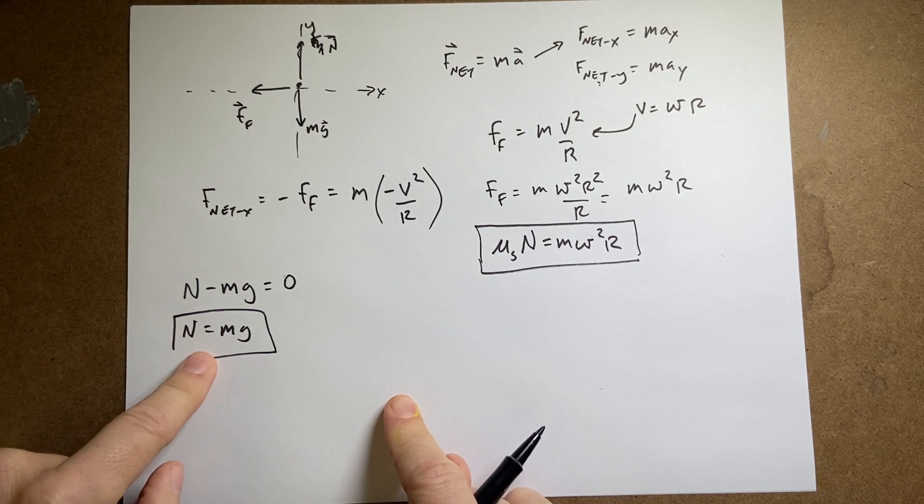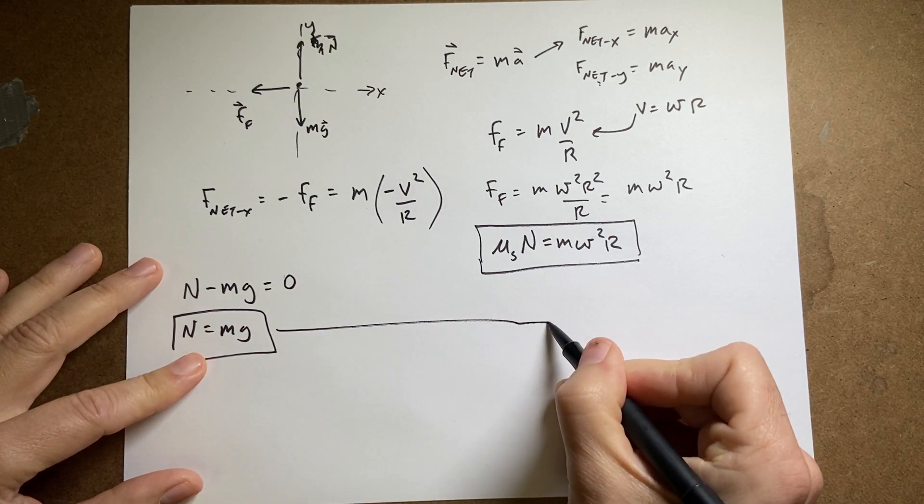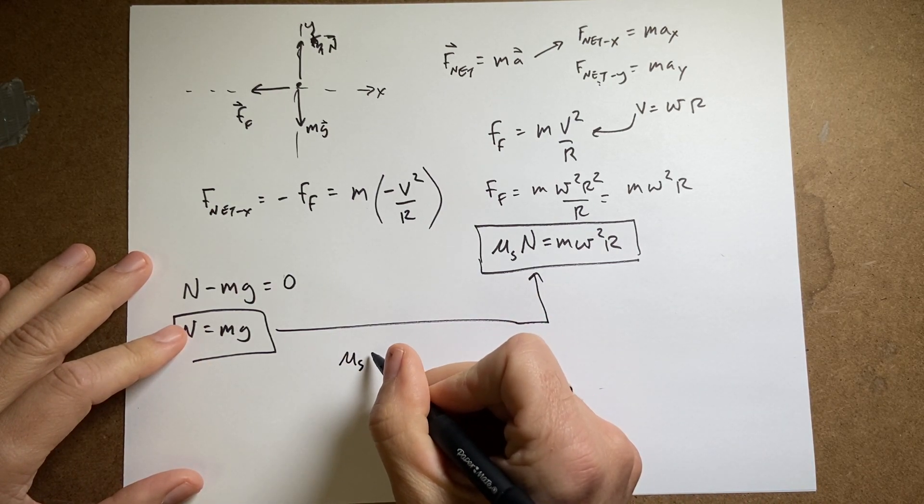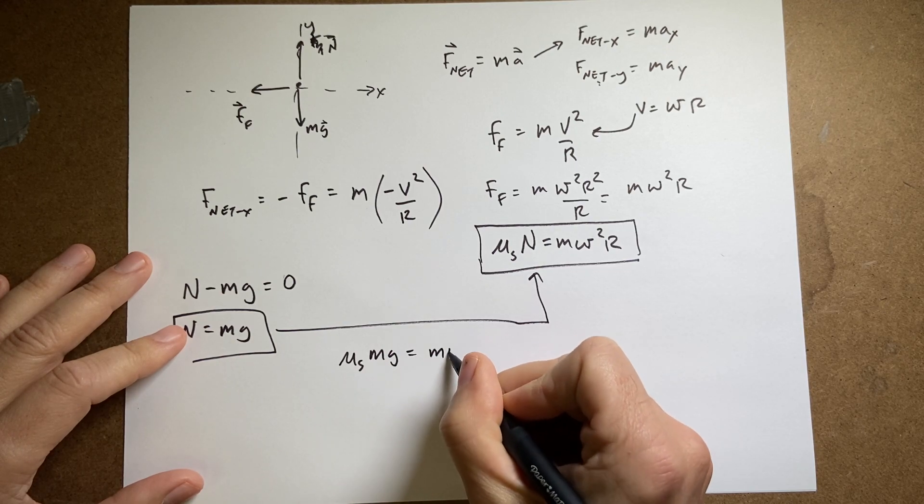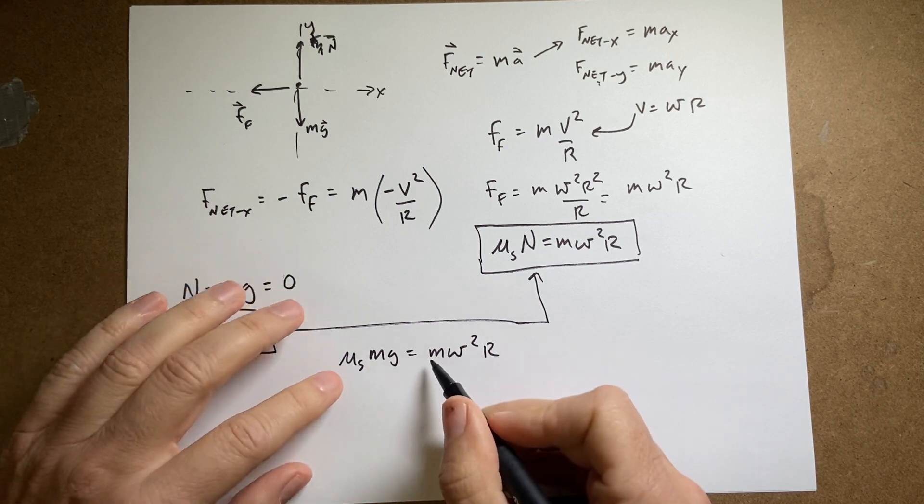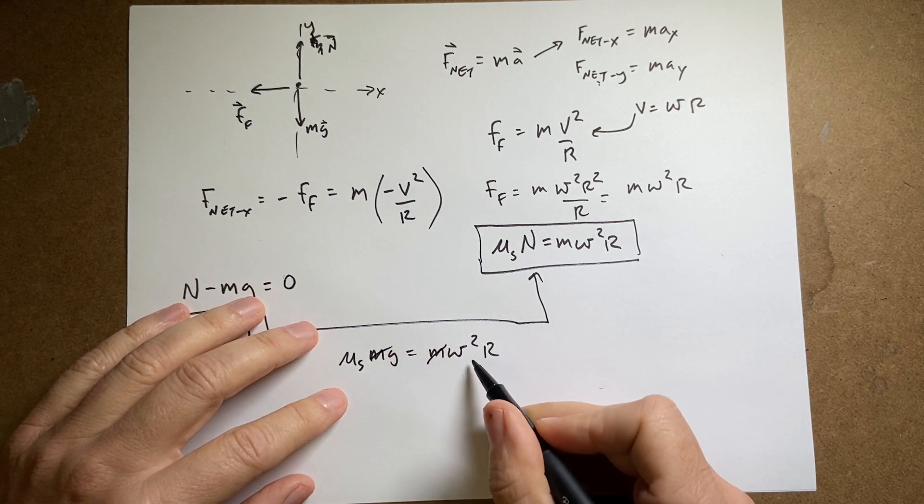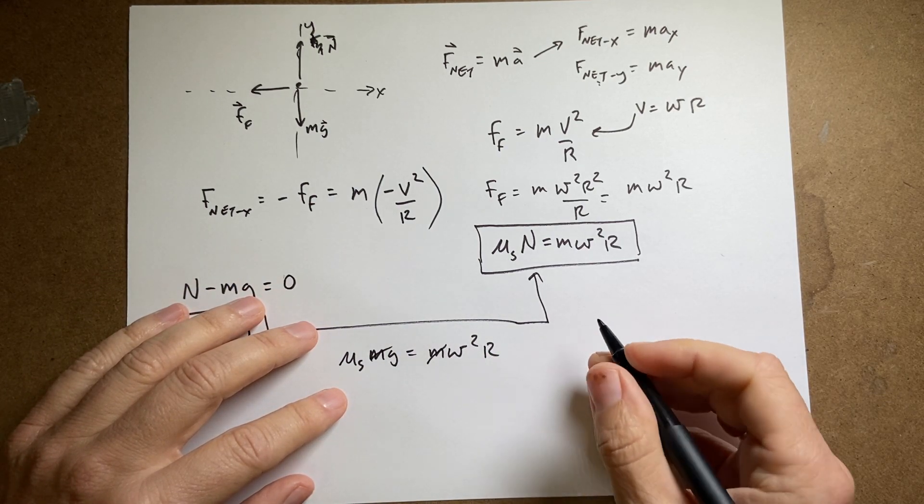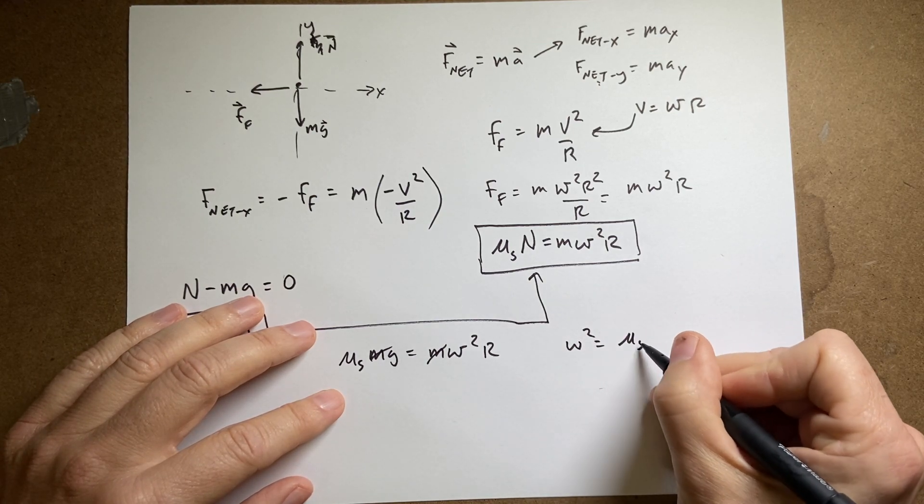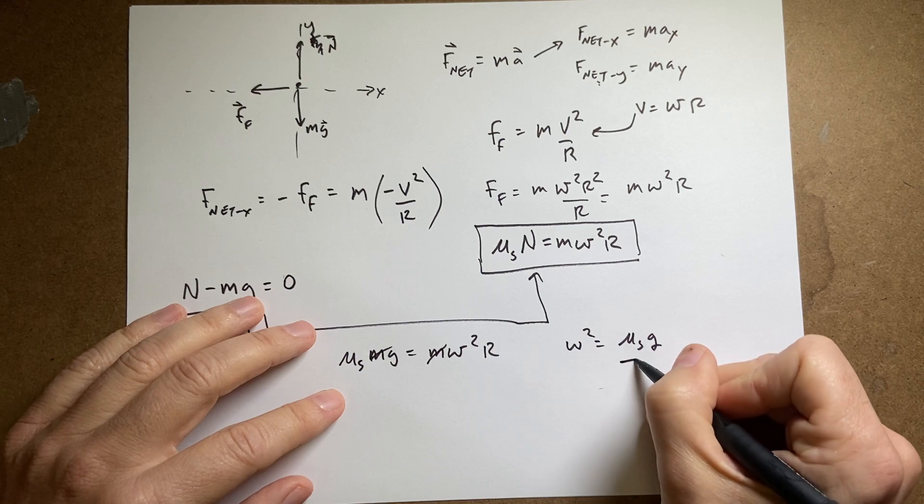But now I can substitute this into there. And I get mu s mg equals m omega squared r. And I want to solve for omega. So first of all, the masses cancel. I'm going to divide both sides by r.